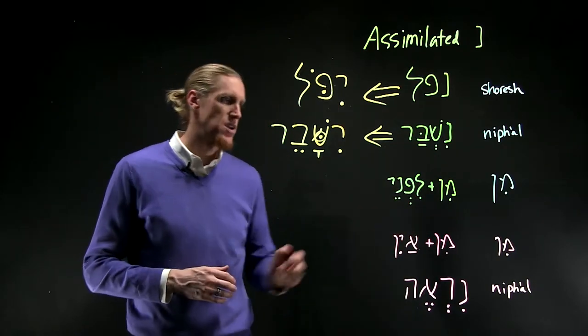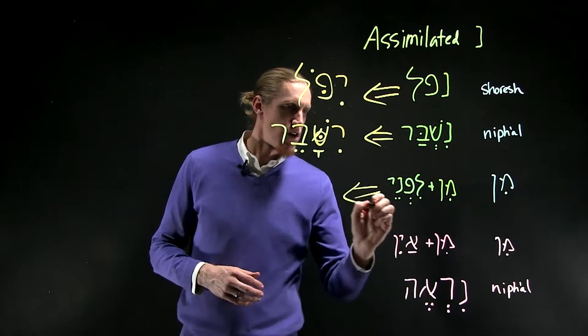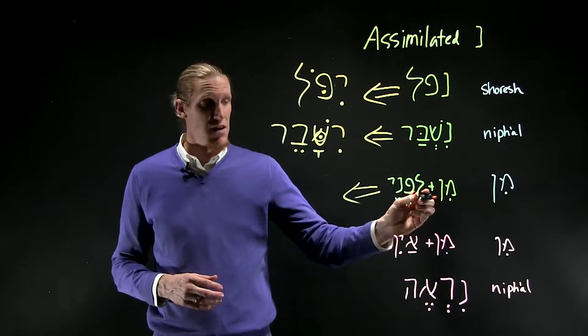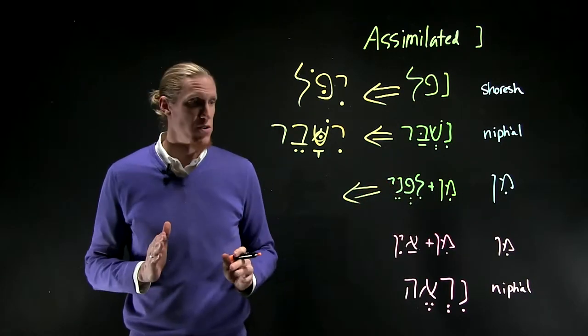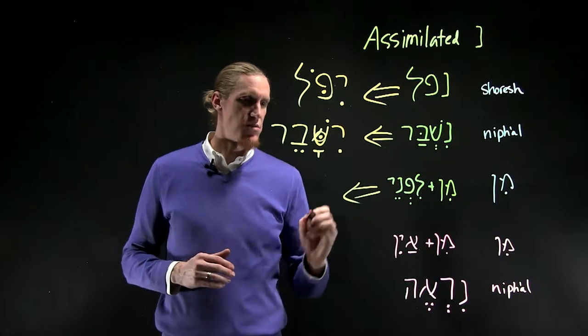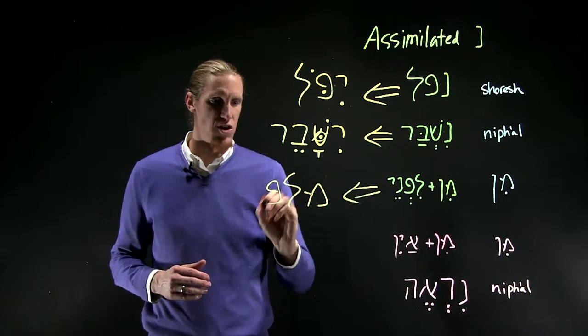but these are three common occasions in which it does so. When you have the preposition min attaching to another word, and the first letter is not a guttural, then the noon will assimilate. This is a familiar word from Jonah,